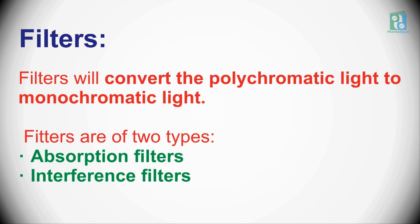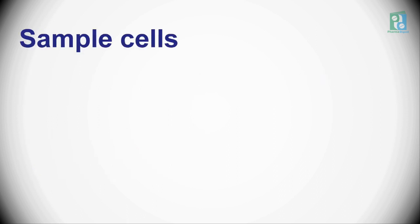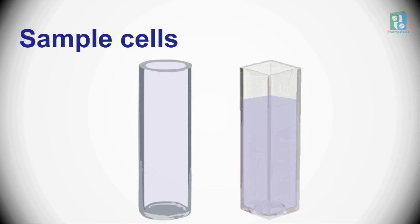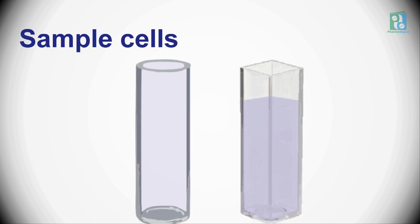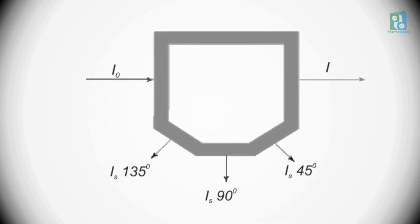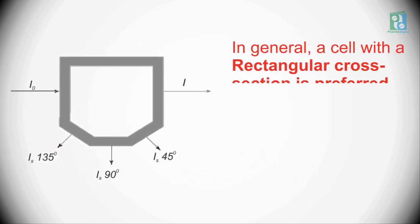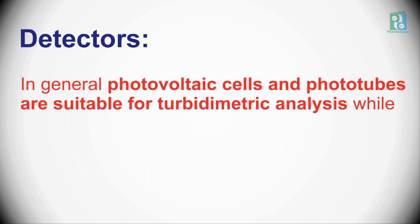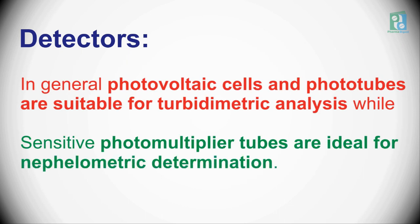Filters are of two types: absorption filters and interference filters. Cuvettes or sample cells are used to hold the sample under interest and are generally made of transparent glass. Geometrically they may either be cylindrical or rectangular in shape. A cell with a rectangular cross section is preferred where measurements are to be made at angles other than 90 degrees. Semi-octagonal cells are widely used. Photovoltaic cells and phototubes are suitable for turbidometric analysis, while sensitive photomultiplier tubes are ideal for nephelometric determinations.